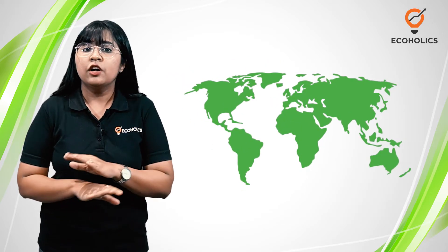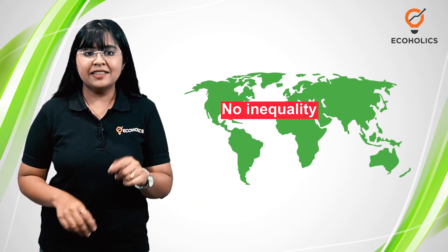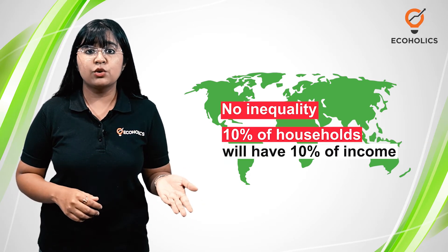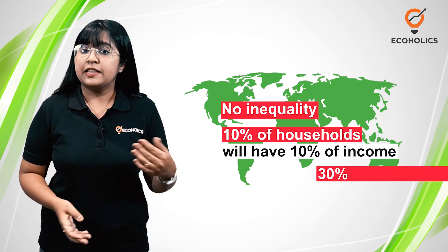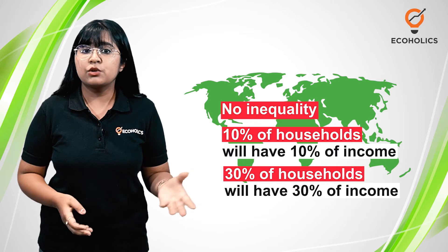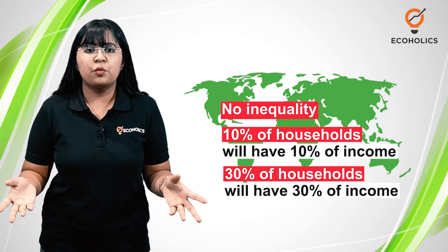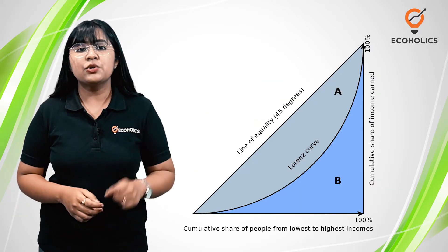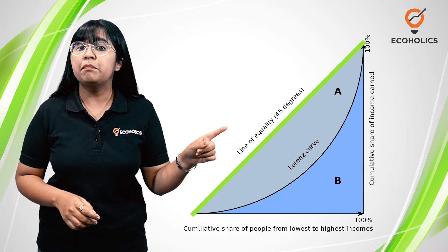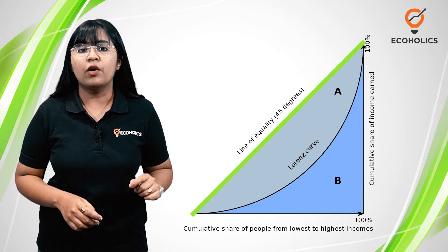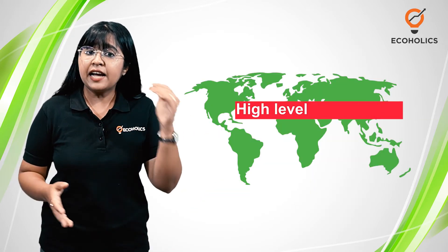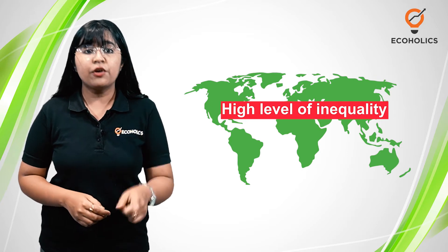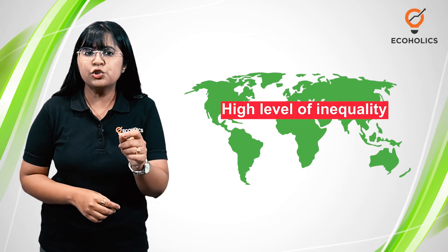Now imagine a country with no inequality. In this country, 10% of the households will have 10% of the income, 30% of the households will have 30% of the income, and so on. Such an ideal country is said to be on the line of perfect equality.